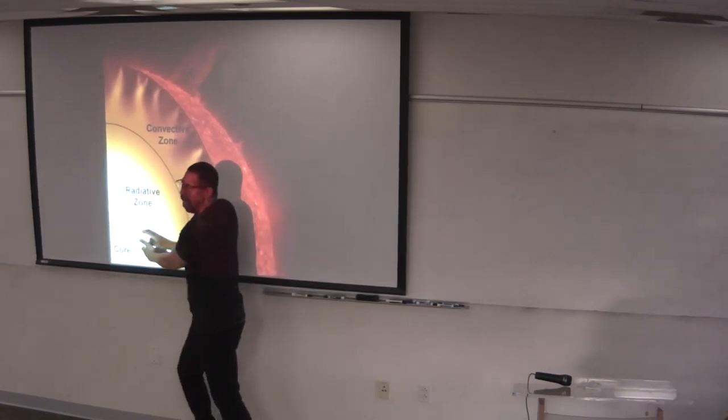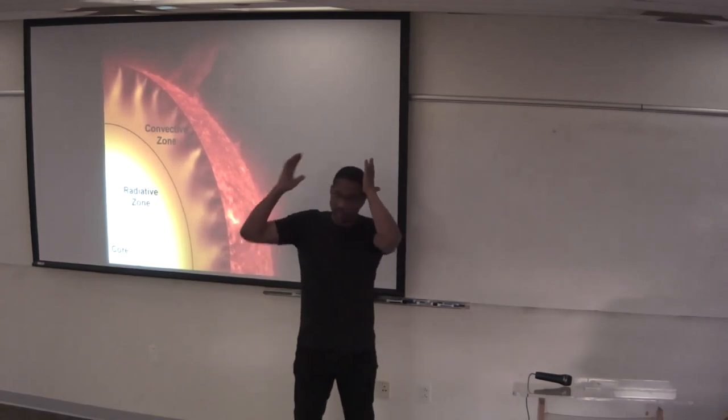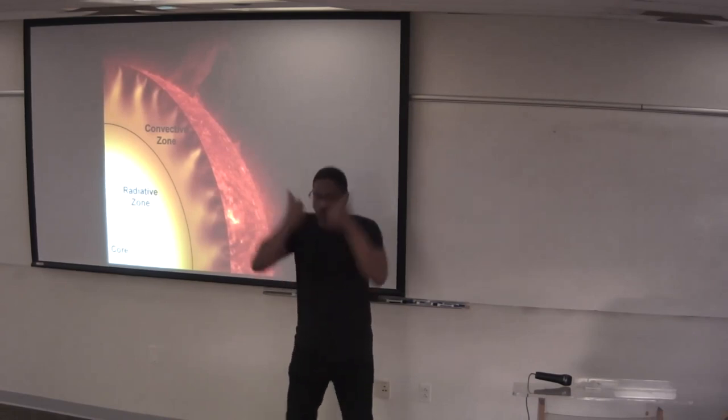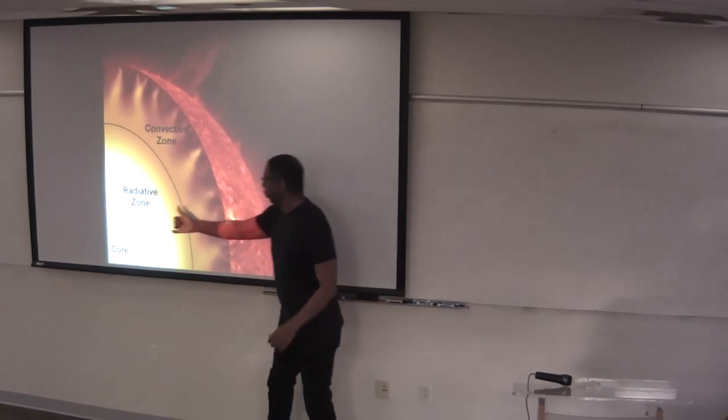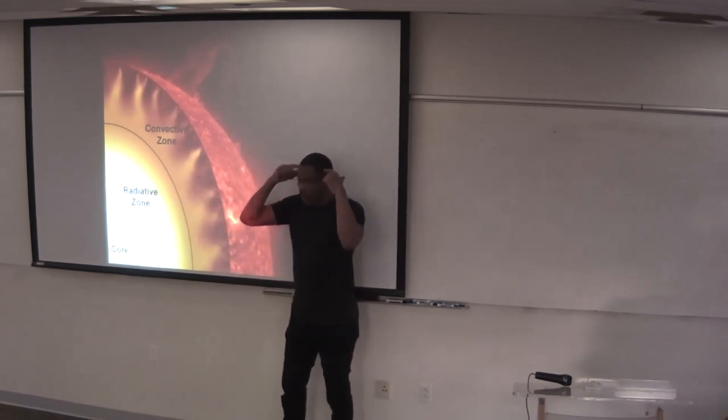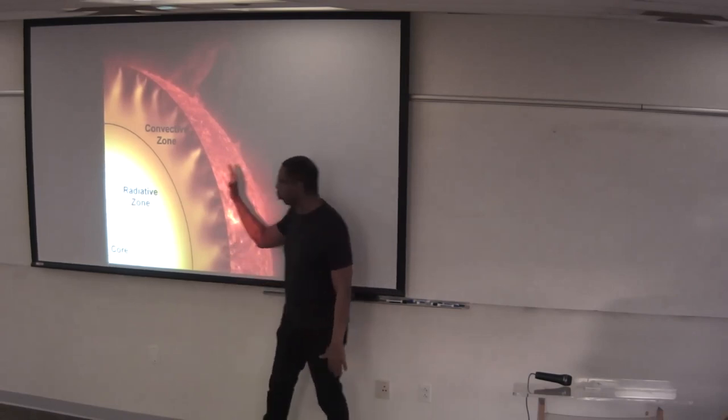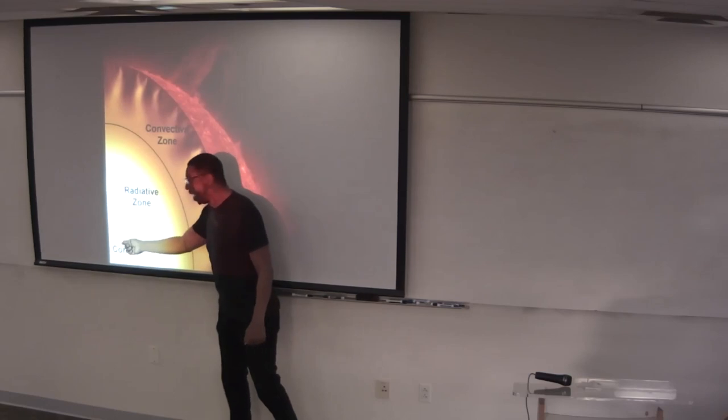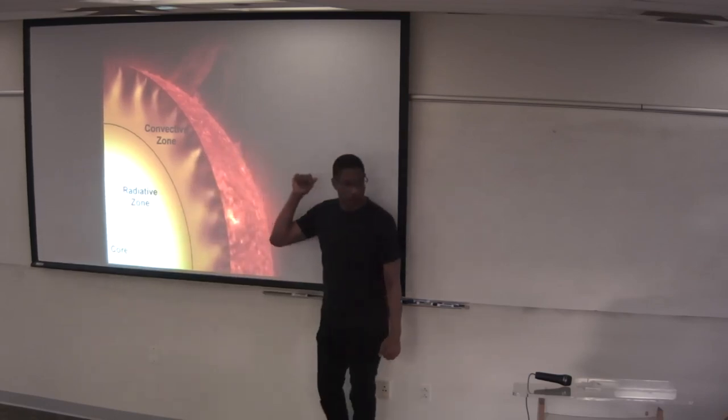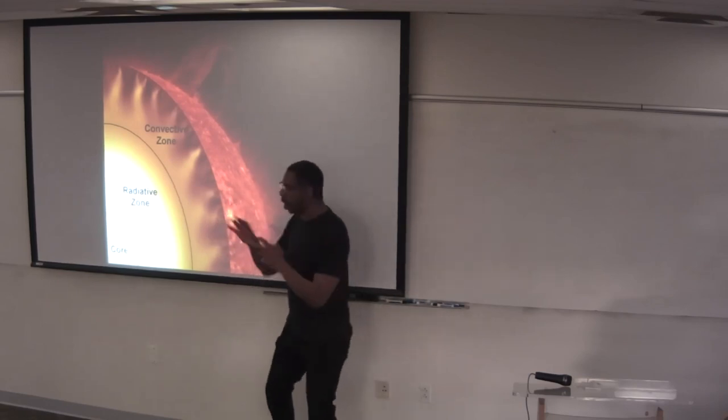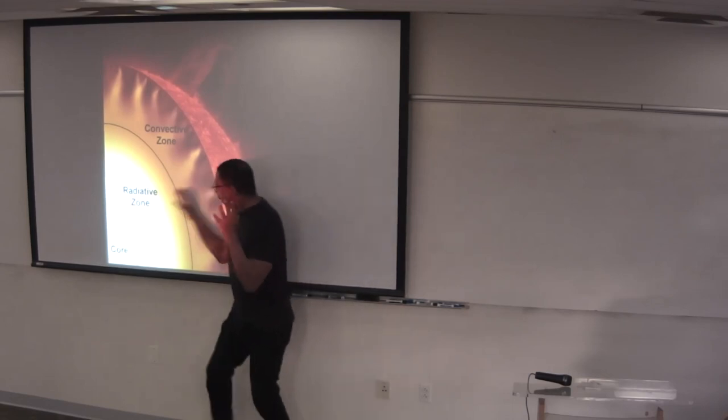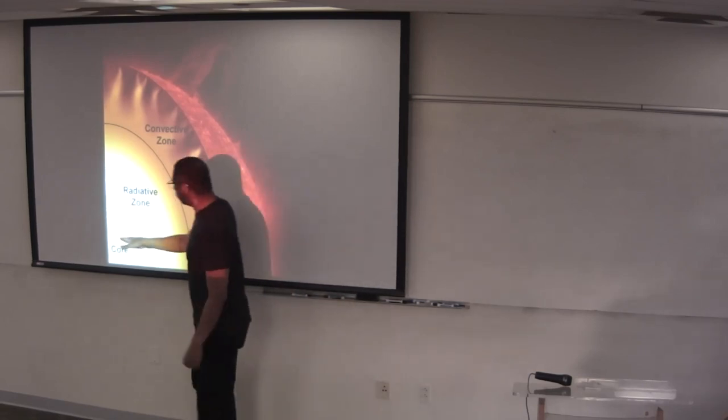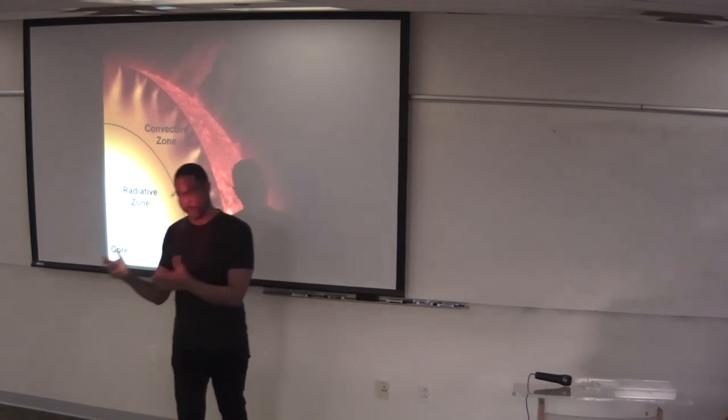What happens with stars as they age is that they throw off their envelope and the core is left behind. If you look at the sun today or an average star, it's what we call a main sequence star. This thing is big and massive, 100 times bigger than Earth. Gravity wants to just crush it down. What really supports the sun from just collapsing in on itself is the radiation pressure of the light that's streaming out from the core.